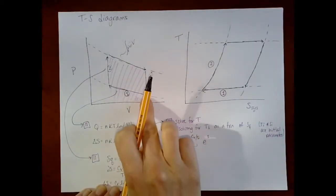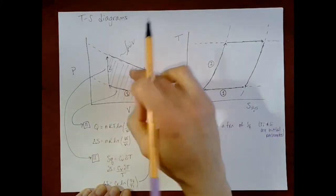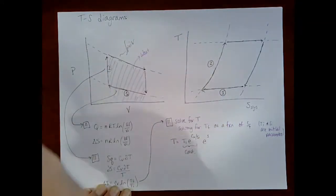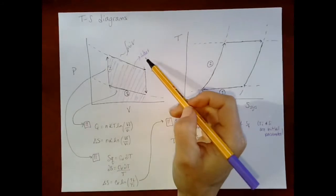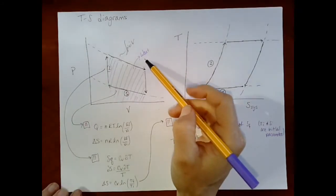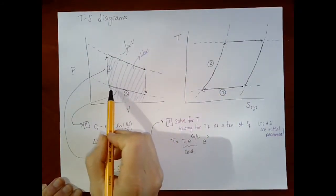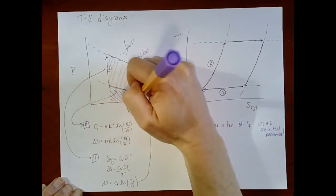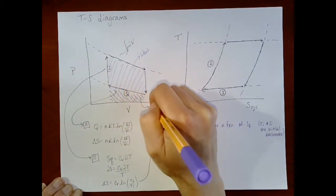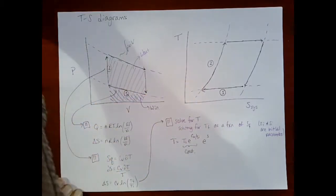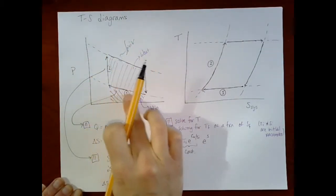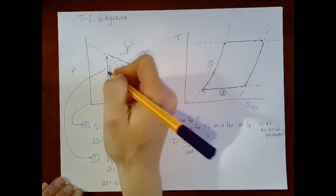And then on the compression side, we considered this to be the amount of work we got out. But that's not really the amount of work we could use because we had to spend some work doing the compression. So here's the amount of work that we had to put in. And this middle region then, so this area minus this area is equal to the net work.